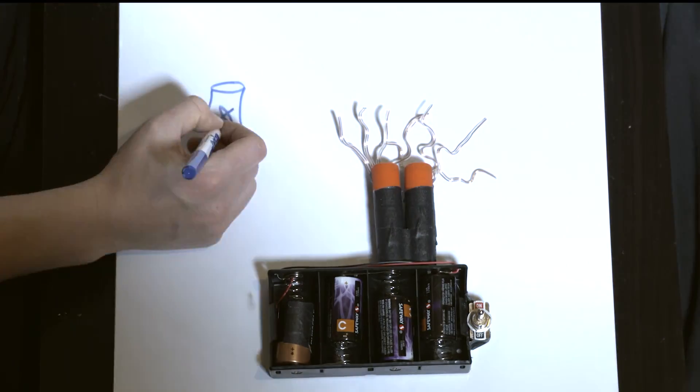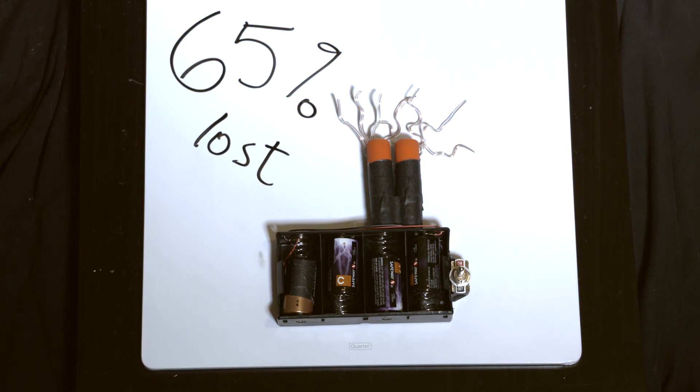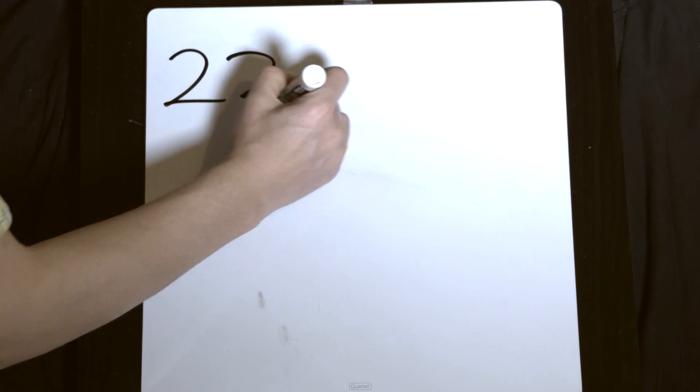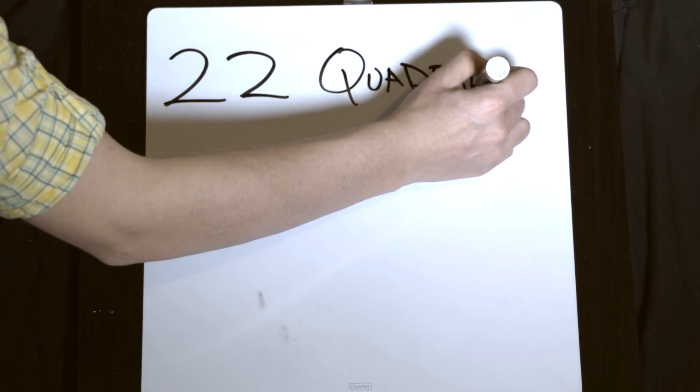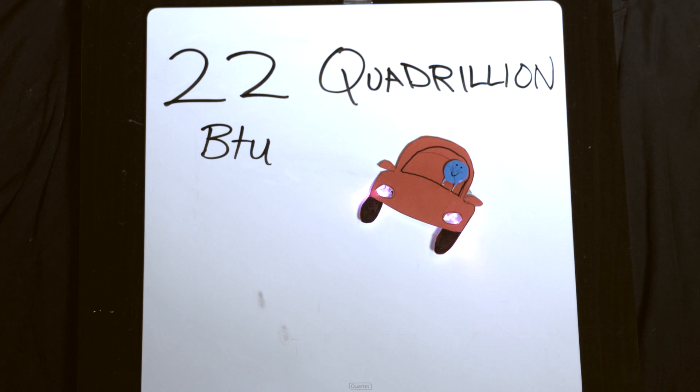So to recap, in power plants, nuclear, natural gas, coal, petroleum, we lose about 65% of the energy in raw materials when we make electricity. That adds up to 22 quadrillion BTU a year in the U.S. That's more than our annual gasoline consumption. Loss to thermodynamics.